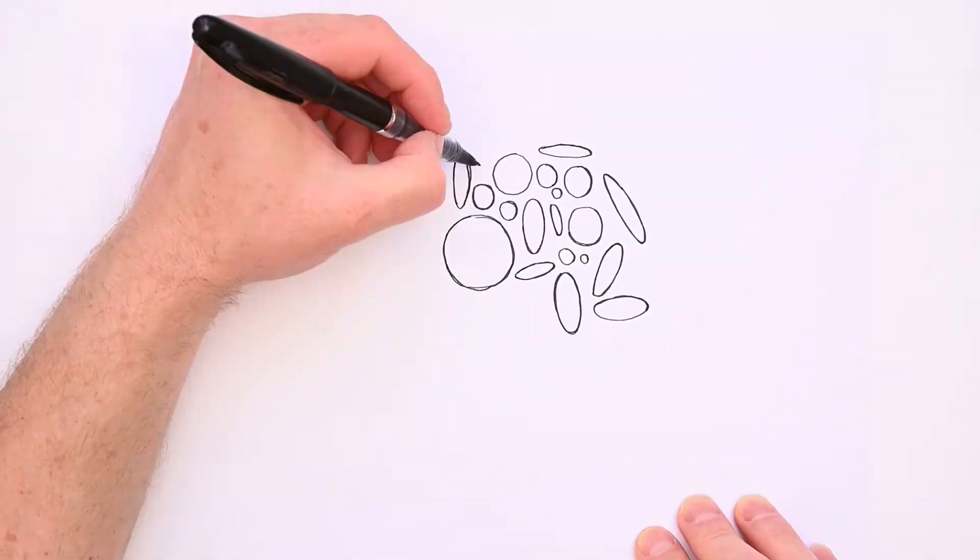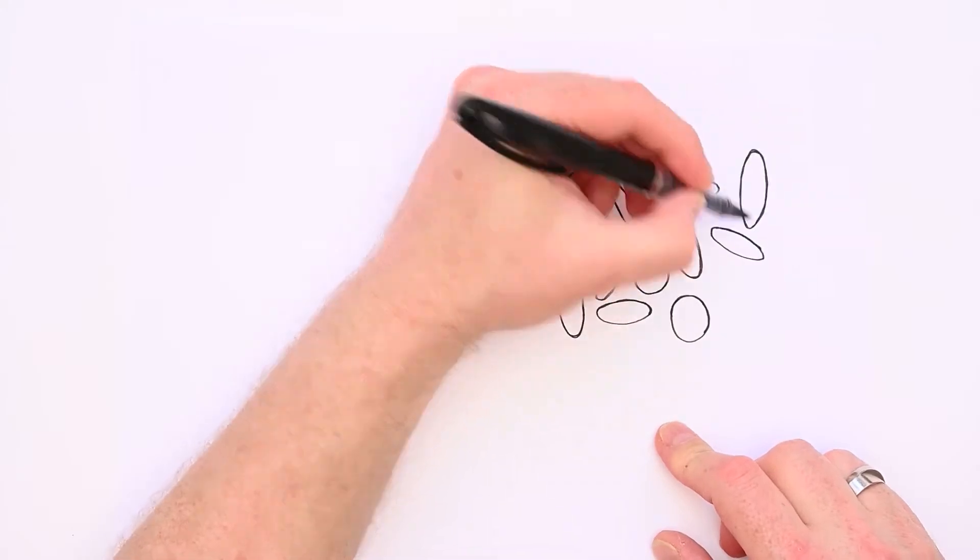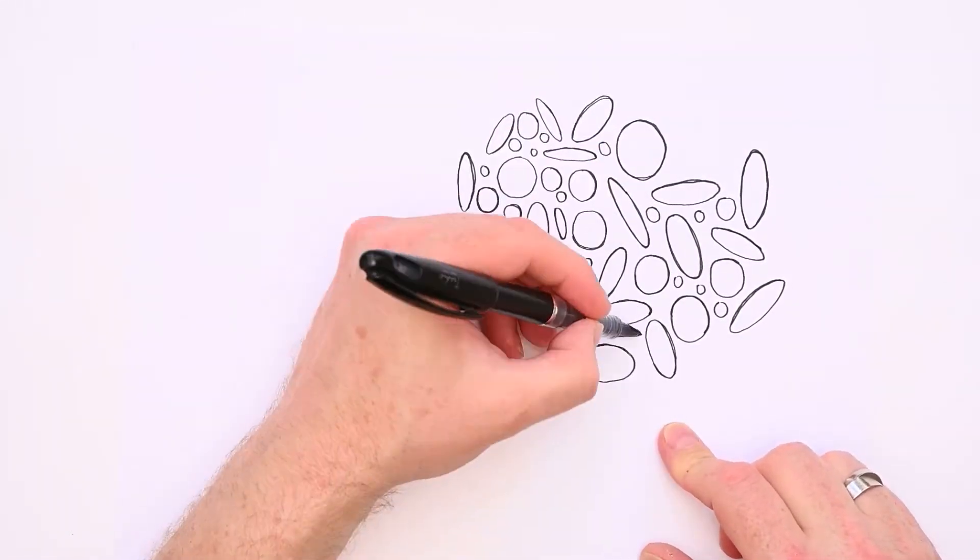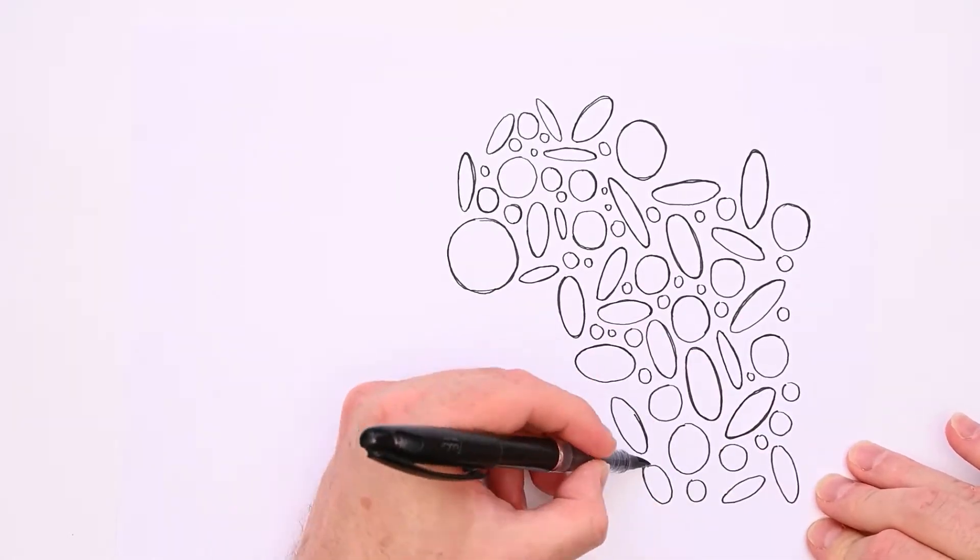You just draw circles and ellipses in many orientations and sizes, and you just keep drawing these circles and ellipses until you feel you are in the zone and ready to start on a finished piece.